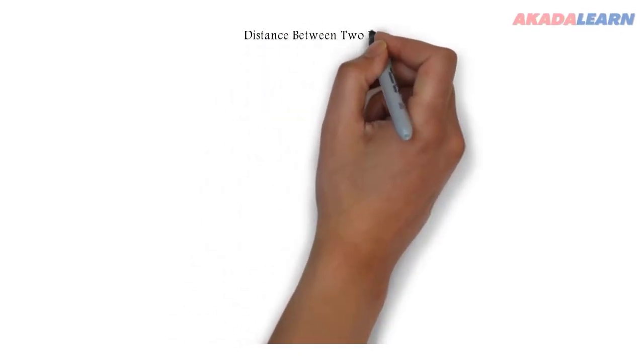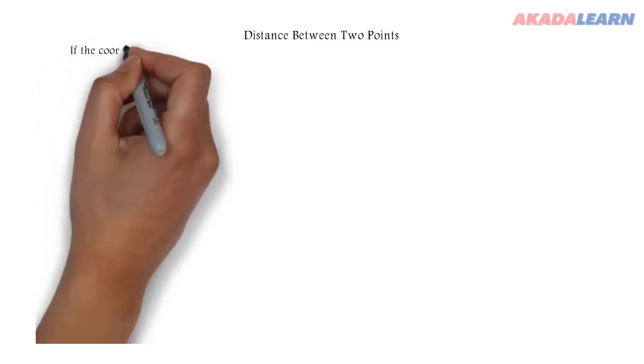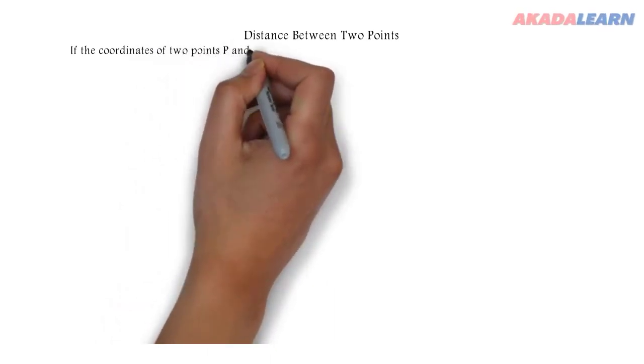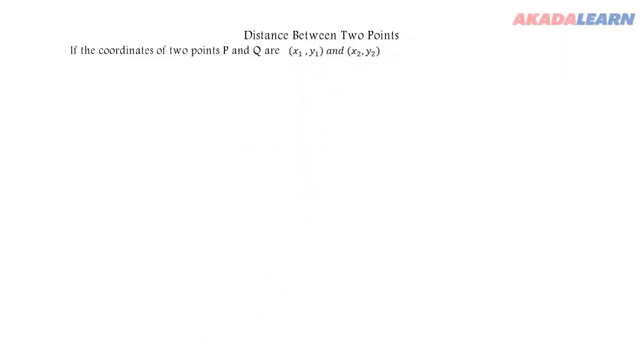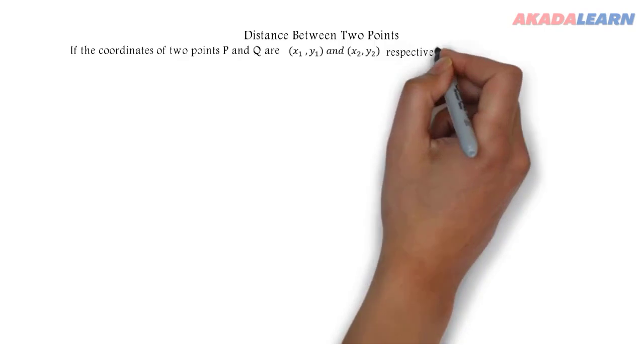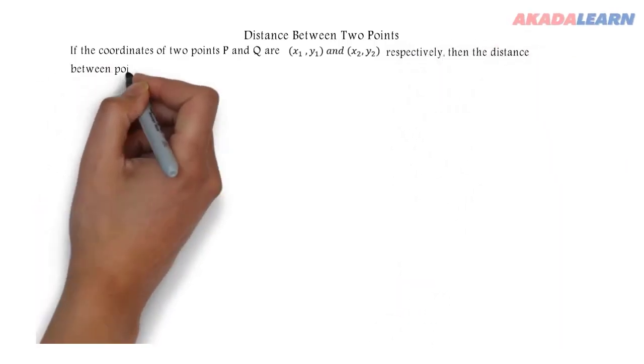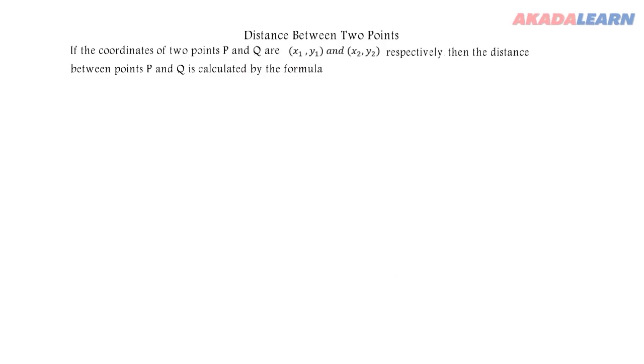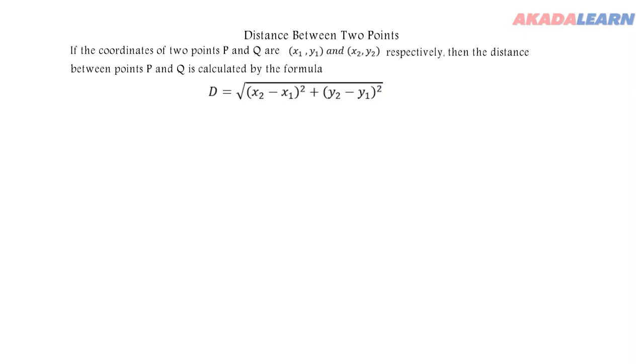Now let's see how to find the distance between two points on a line. If the coordinates of two points, P and Q, are given as (x₁, y₁) and (x₂, y₂) respectively, then the distance between points P and Q is calculated by this formula: D equals square root of (x₂ minus x₁)² plus (y₂ minus y₁)².